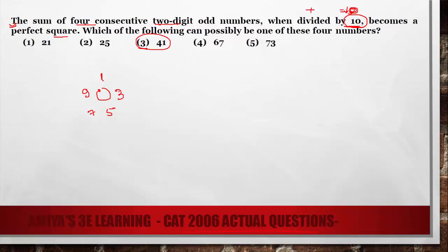Because we are looking for consecutive. So 1, 3, 5, 7, 9, then again 11, 13, 15, then 19, 21. So this is a circle. We have to add any four consecutive ones, and we want the last digit should be 0.